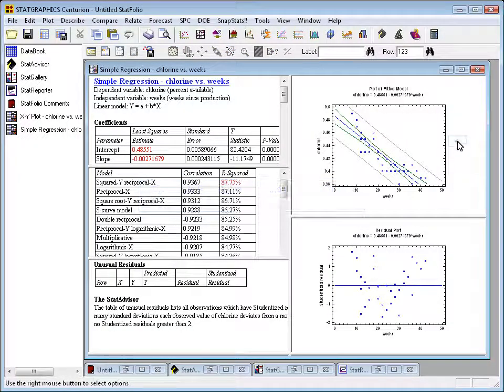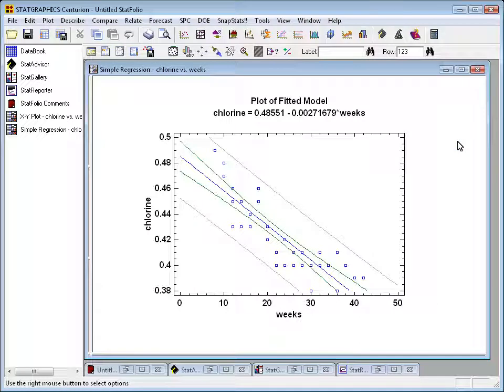When I double click in the upper right, I'll see initially a plot of the linear model. This shows the linear model with 95% confidence intervals. Those are the inner bounds and 95% prediction intervals. The confidence intervals are appropriate for the mean response. The bounds, the prediction bounds, are appropriate for individual observations.